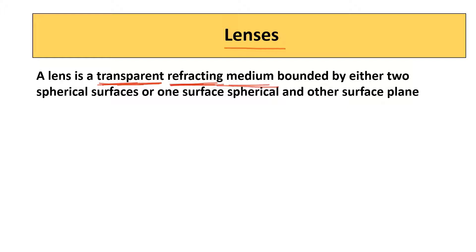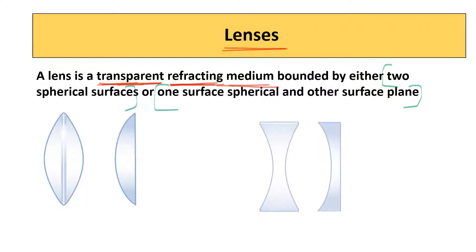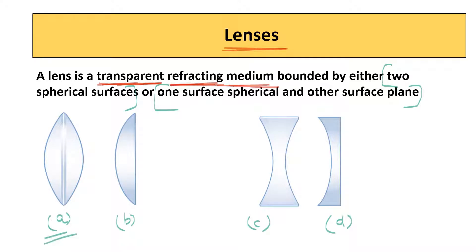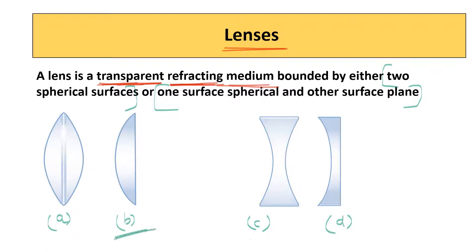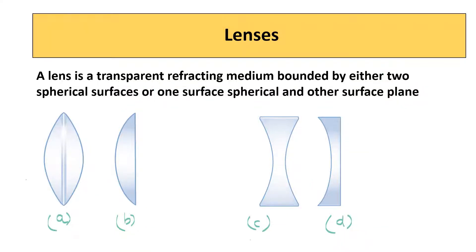A lens is a transparent refracting medium and it is bounded by either two spherical surfaces, or one spherical surface and the other surface plane. In A and C they are bounded by two spherical surfaces. In B and D one surface is spherical and the other surface is plane. For a lens, at least one surface must be spherical.